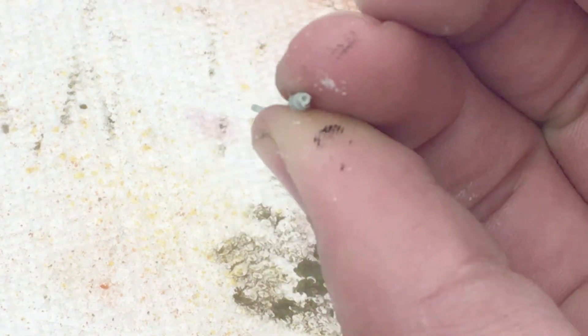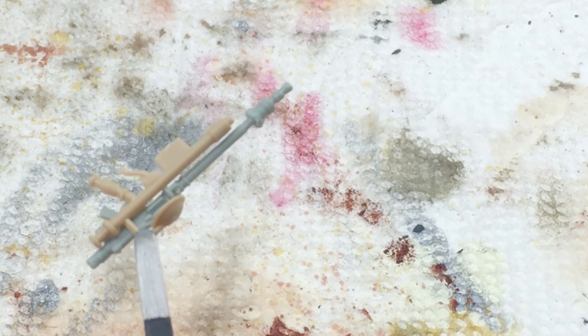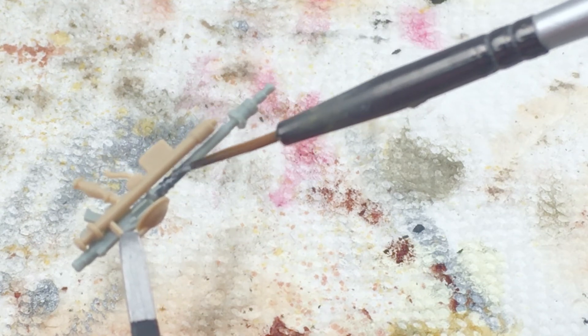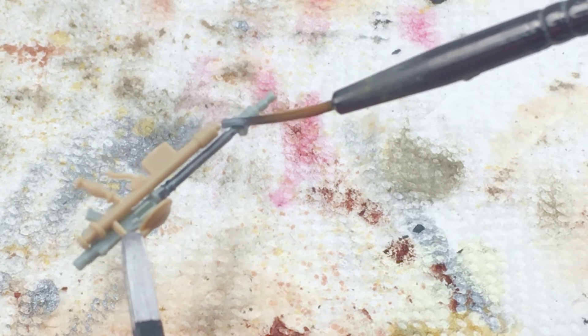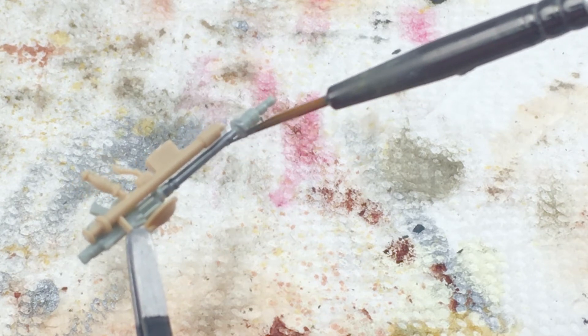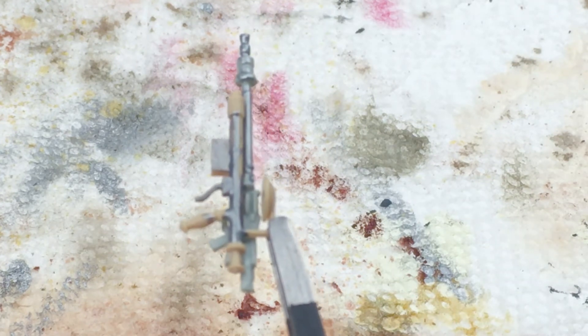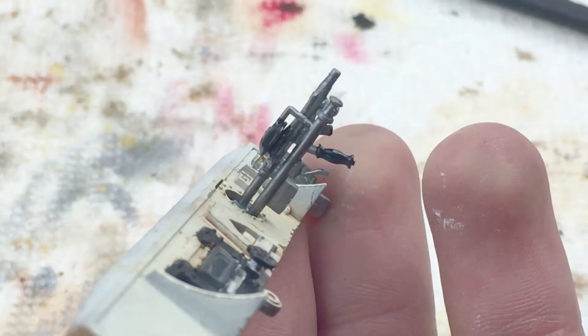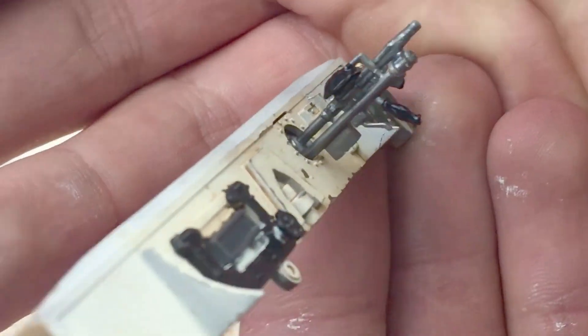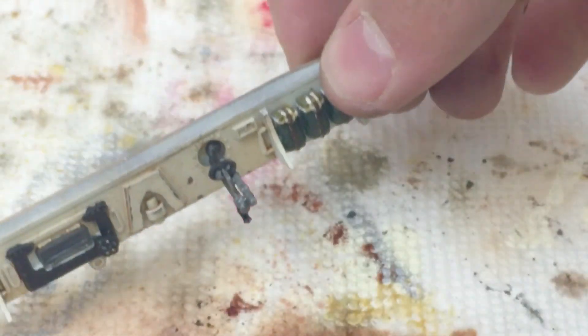Next I'm going to drill out the MG 42 with my Xacto knife. I'm going to use Vallejo Air gunmetal for this. After I was done painting the details with gloss black, I polished it in the same way and as you can see it looks really good.